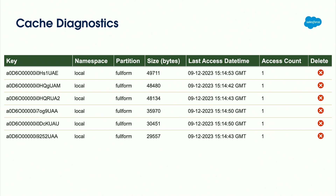This is all really useful data to figure out how your cache is being utilized. You can make changes to your code based on whether people are hitting certain cache entries as often as you expected. You can also access a good amount of this data programmatically through anonymous Apex or by setting up a custom dashboard.